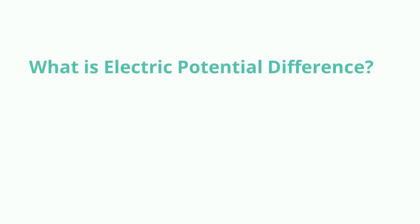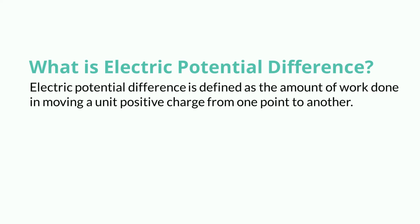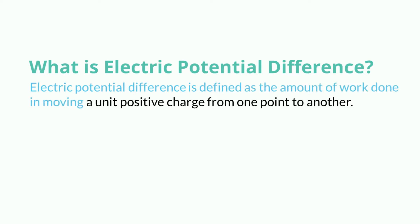What is Electric Potential Difference? Electric Potential Difference is defined as the amount of work done in moving a unit positive charge from one point to another.